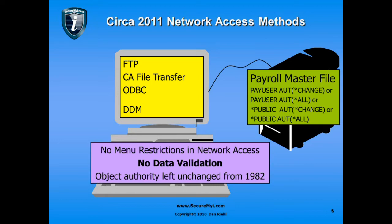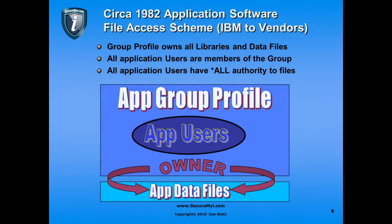In circa 1982, the application software file access scheme IBM communicated to all commercial software vendors — the same scheme still in place today — has a group profile that owns all libraries and data files for an application, with all application end users as members of that group. Therefore, all application users have all-authority to all data files that make up the application. Here we have the application group profile: all application users are members of that group and are owners of the application data files. As far as authority is concerned, everybody is authorized to everything.